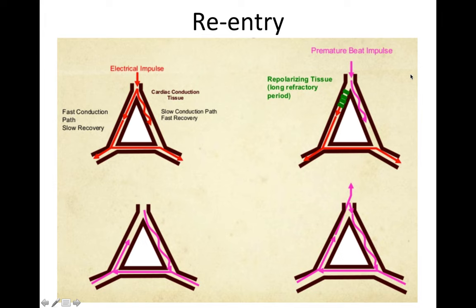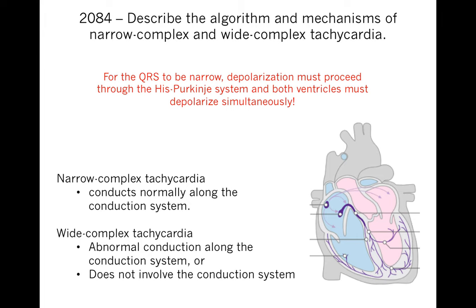For re-entry to occur, you must have two pathways — or two limbs — that allow a re-entrant circuit. To have a narrow QRS complex, depolarization must proceed through the His-Purkinje system and both ventricles must depolarize simultaneously. If one ventricle depolarizes before the other because of a diseased His-Purkinje system, or if depolarization does not occur through the His-Purkinje system, the QRS complex will be wide.